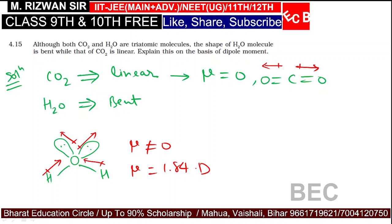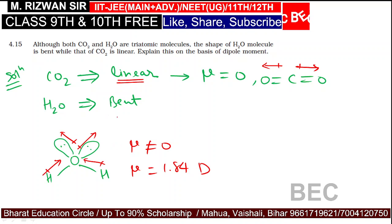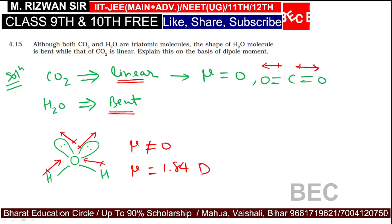Hence, the structure of CO2 is linear while the structure of H2O is bent.